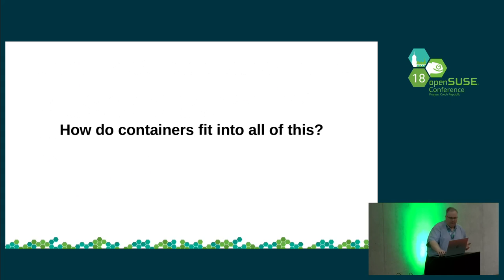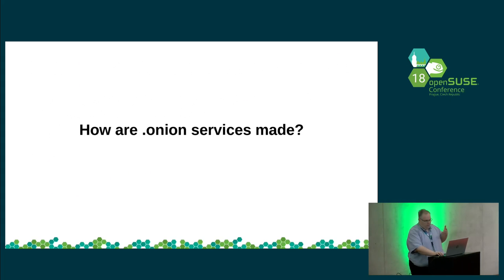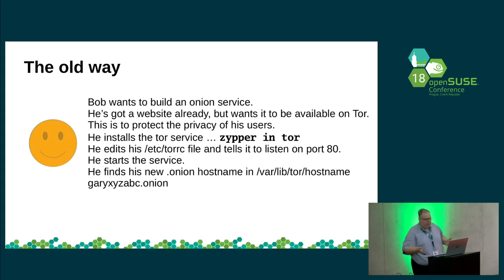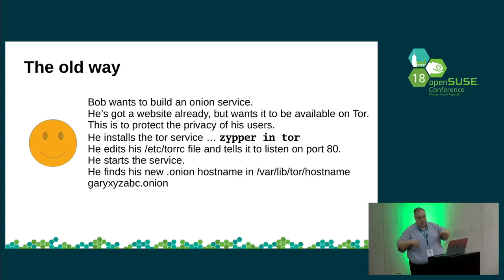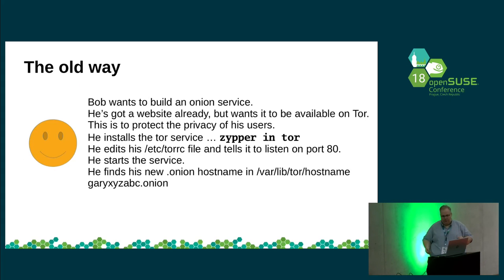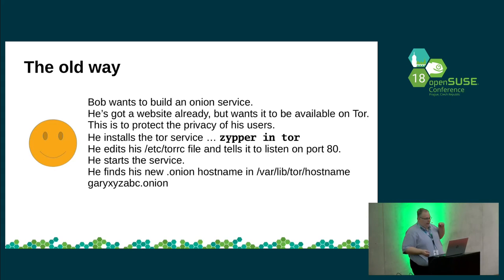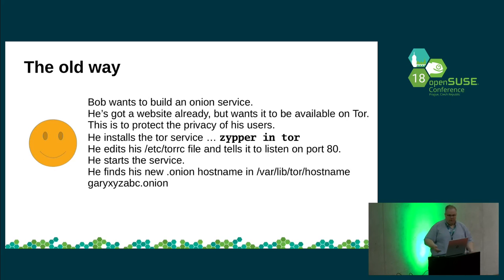How do containers fit in all this, and how are onion services made? The old way — not using containers — Bob wants to build an onion service. He's got a website already but wants to be available on Tor to protect the privacy of his users. He installs the Tor service with zypper, he's a good Linux user and uses OpenSUSE. He edits his /etc/tor/torrc file and tells it to listen on port 80, starts the service, gets a new onion hostname, and anybody can go to that website via the Tor browser.